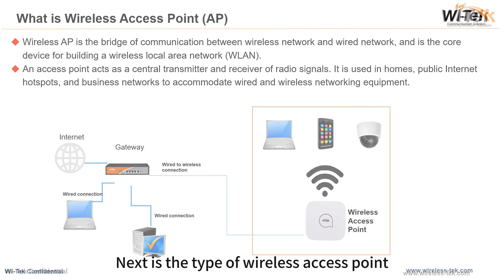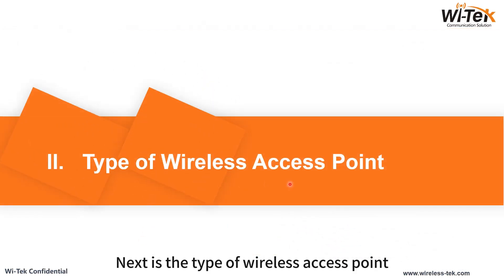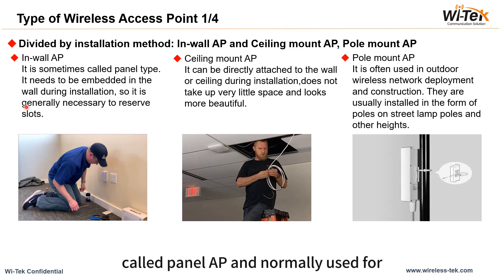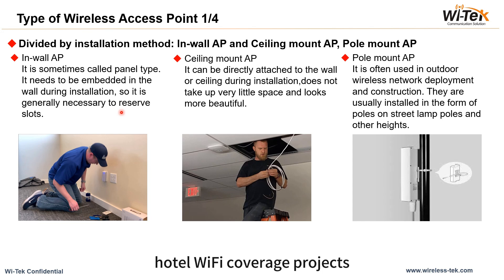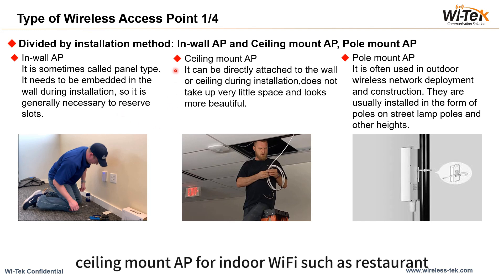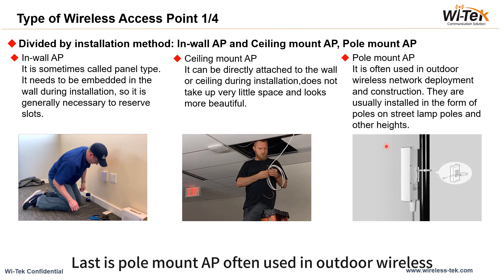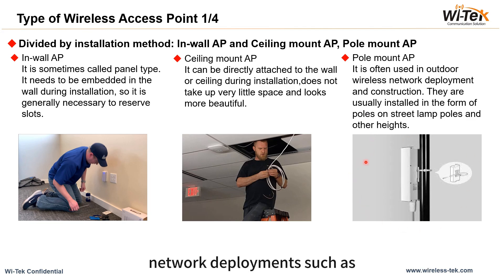Next is the type of wireless access point. Divided by installation method, we have in-wall AP, also called panel AP, normally used for hotel Wi-Fi coverage projects; ceiling mount AP for indoor Wi-Fi such as restaurants, schools, and offices; and pole mount AP, often used in outdoor wireless network deployments such as swimming pools and squares.